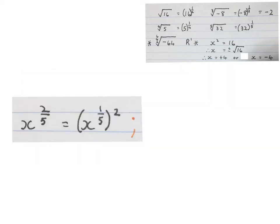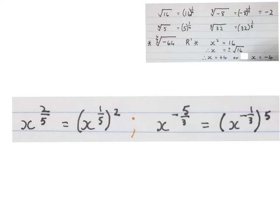Also understand: if you get x to the power of 2 over 5, it's the same as x to the power of a fifth, to the power of 2. x to the power of minus 5 over 3 can be written as x to the power of minus a third, to the power of 5.